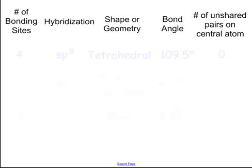Now when we get four bonding sites, we call that SP³ hybridized. One bonding in the S orbital, three in the P orbital, that adds up to four. And that gives you a tetrahedral shape. Now tetrahedral has a bond angle of 109.5 degrees, and that has zero unshared pairs. And you have to know that shape.